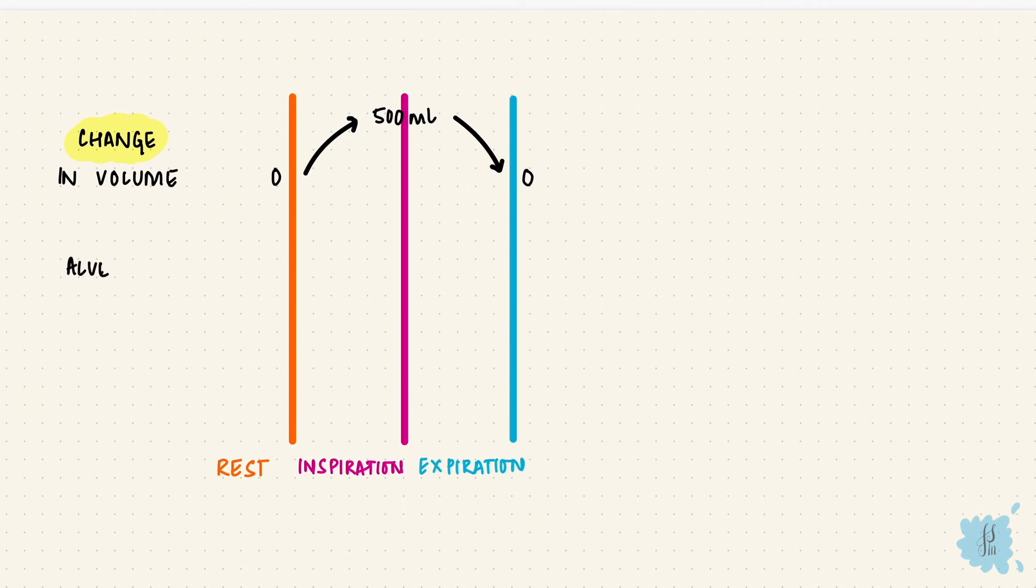For that 500 ml to enter, what happened to the alveolar pressure? It went from 0 at rest, down to minus 1, came back to 0 at the end of inspiration. Then for the 500 ml to leave, it went to plus 1, and then came back to 0 again.